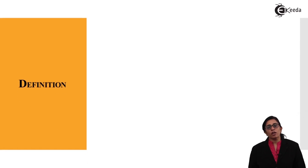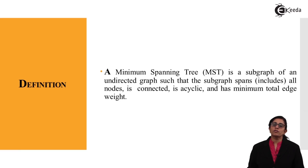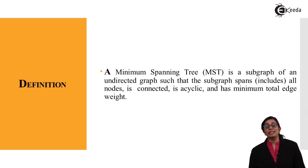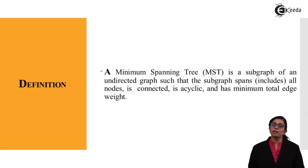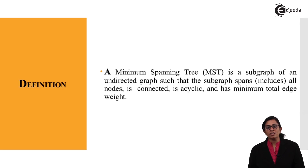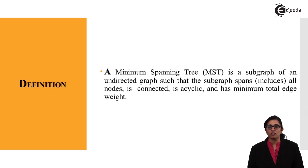What is the definition of a minimum spanning tree? A minimum spanning tree is a sub-graph of an undirected graph such that the sub-graph spans — it includes all the nodes — that are connected in a cyclic manner and has the minimum total edge weight.